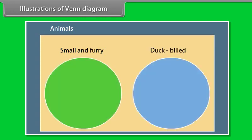We'll call our universe animals. Let's say we want to classify things according to being small and furry or being a duck bill. We draw circles to display our classifications. Now we'll fill in or populate the diagram.